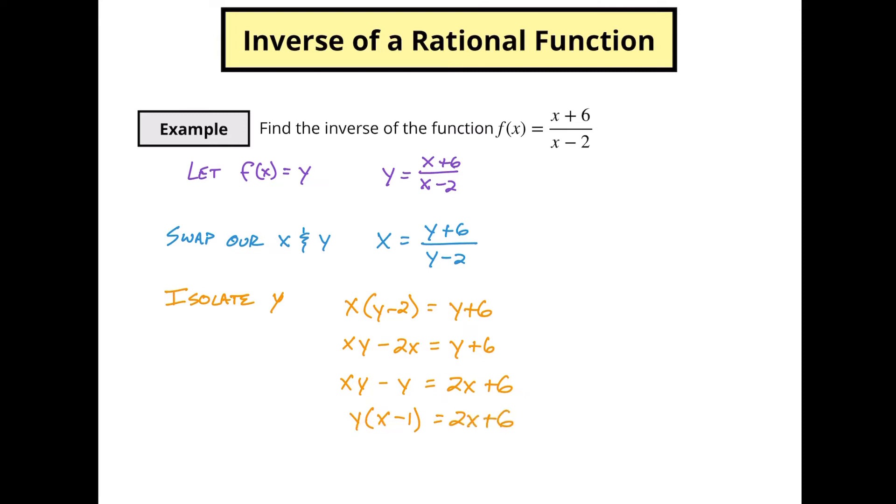So again, if we take y times x we get xy. We get y times negative 1, we get negative y. So now at this point we can divide both sides by this x minus 1 and we are left with 2x plus 6 over x minus 1.